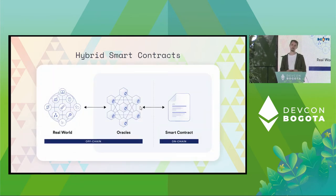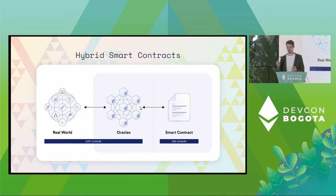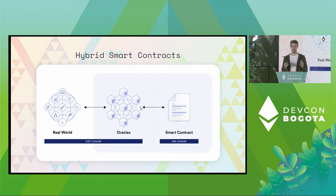This gives rise to the notion of hybrid smart contracts — a hybrid system that partly operates on-chain in the form of a smart contract running on Ethereum, and partly off-chain operated by a network of decentralized oracles. This overall hybrid smart contract is now able to interact with the real world, which enables all sorts of interesting things.